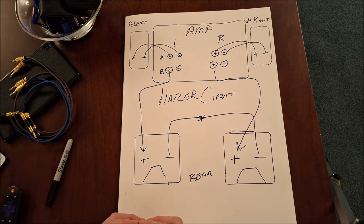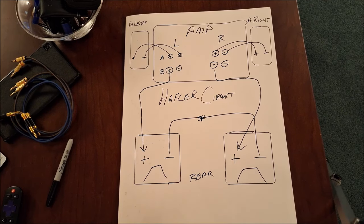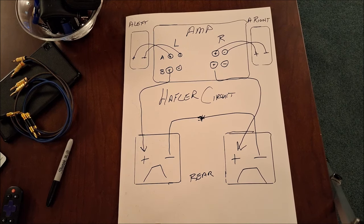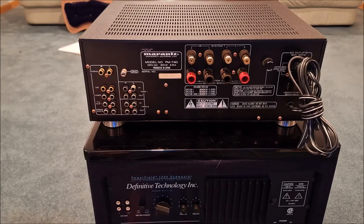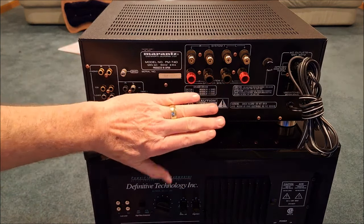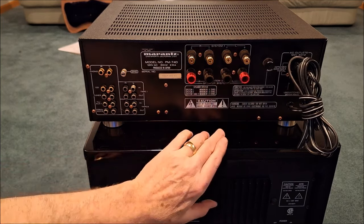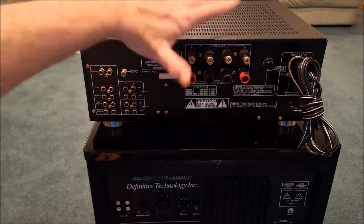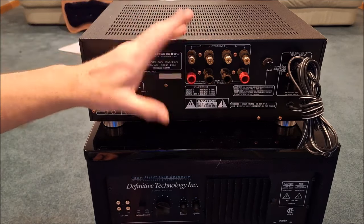Even small Class D amplifiers all the way up to — I use a Cambridge AXR 100 receiver for my main amplification. So this Hafler circuit is really cool, the sound is great. I'm going to set up and show you actually how to physically wire it up on the back of one of my old vintage Marantz pieces. Here we are around the back of the amplifier. Let's assume that on the A set of the speaker selector I have my main speakers wired up conventionally.